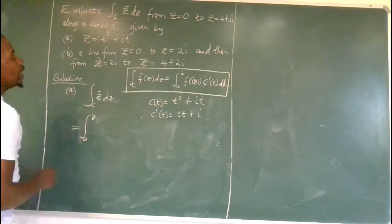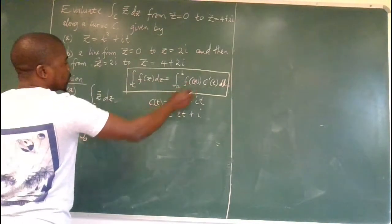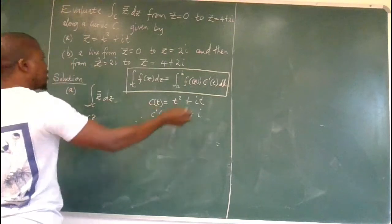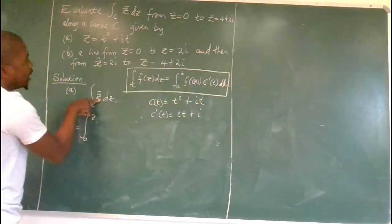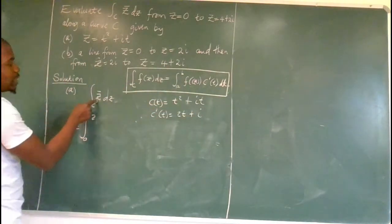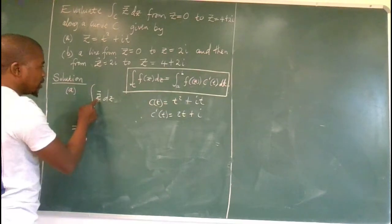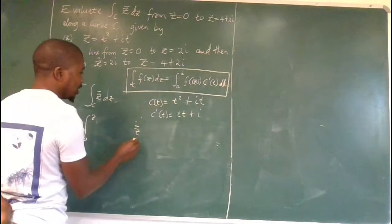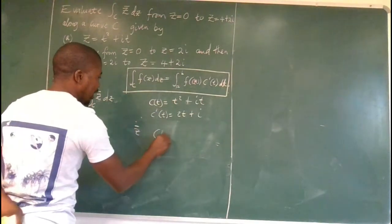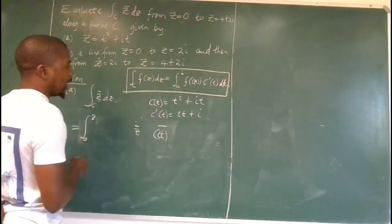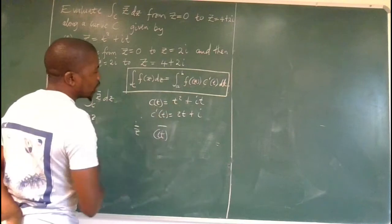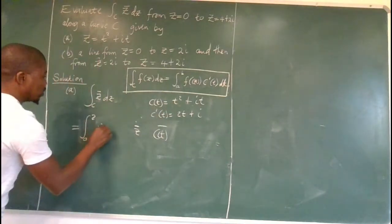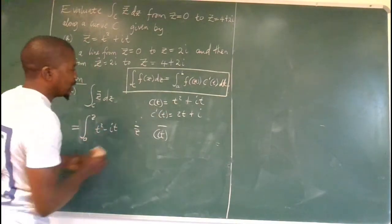So 0 to 2 and then we need to take this c(t), place it into the original function which is z. So we need z bar. If we substitute, what is z? We put c(t). In other words, we require c(t) bar. So the conjugate of that is none other than t squared minus i t.